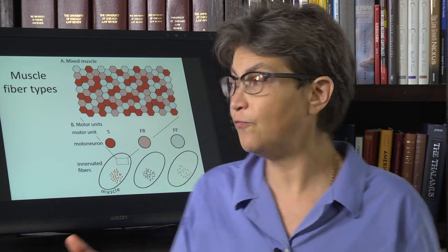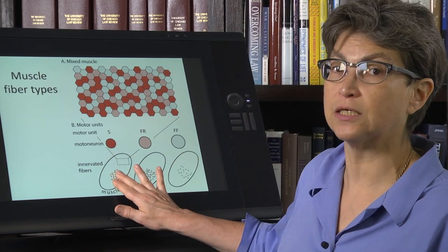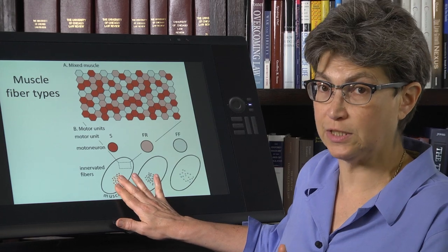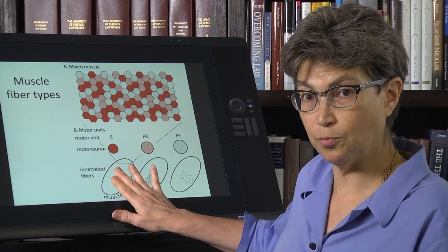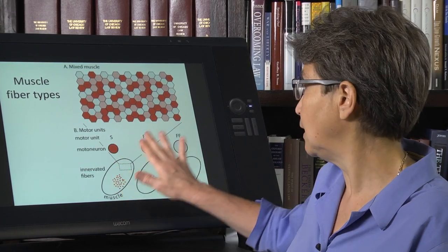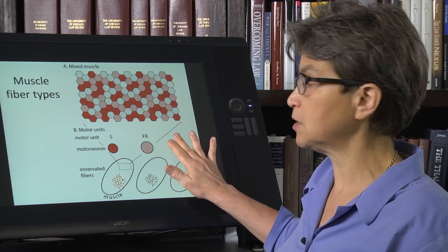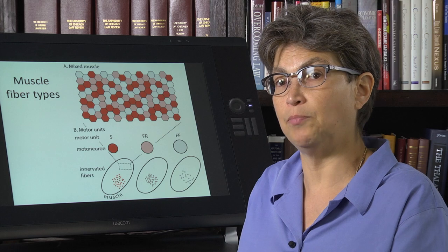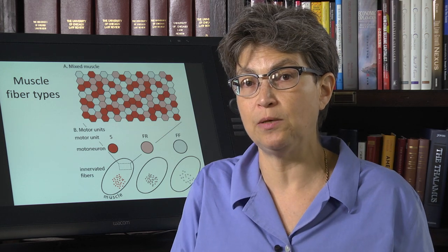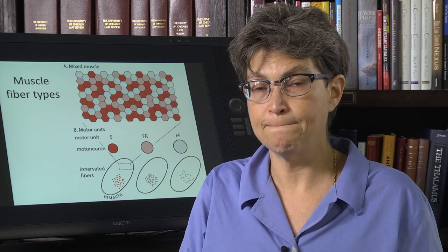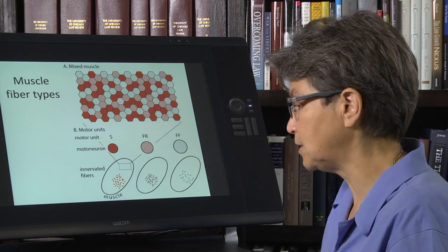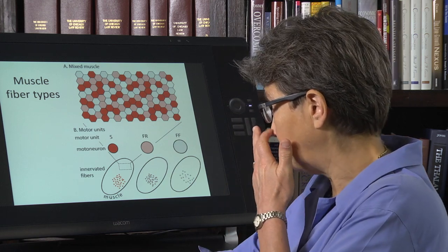Well, if you lose these, it's going to be endurance. Strength will be relatively spared, but endurance will be severely affected. In contrast, if you lose FF motor units, strength will be impaired, whereas endurance may be preserved. So that's an important point to remember.